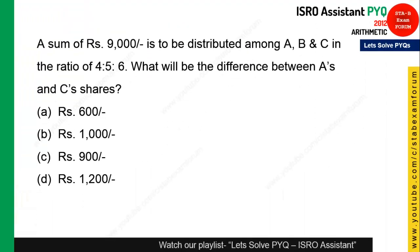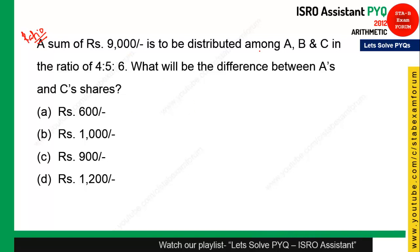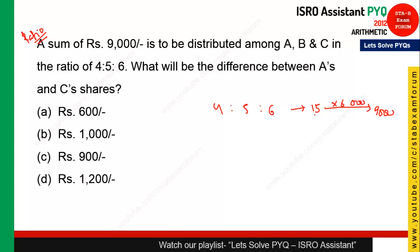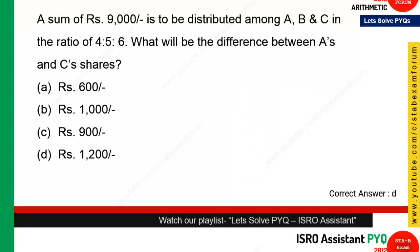This question is from ratio. A sum is distributed among A, B, and C in the ratio 4:5:6. The total parts = 4 + 5 + 6 = 15, and each part = 9000 / 15 = 600. The difference between A's and C's shares is 6 − 4 = 2 parts, so the difference = 2 × 600 = 1200. Option D is the right answer.